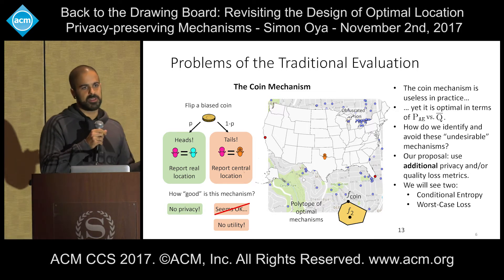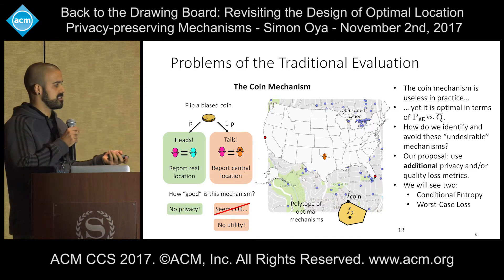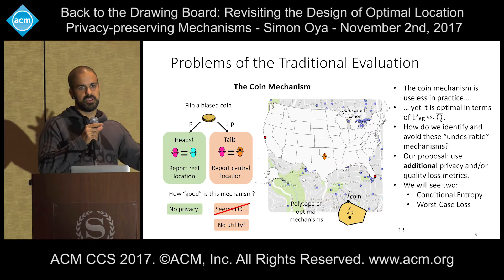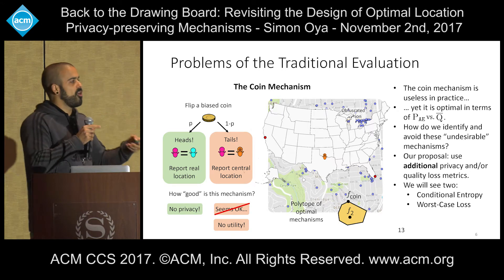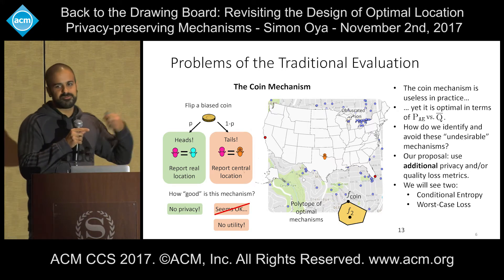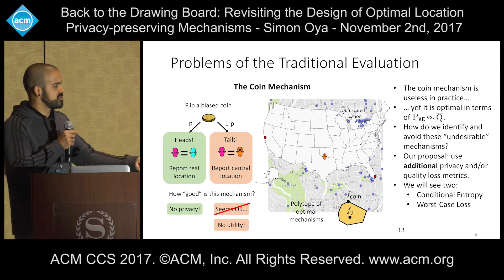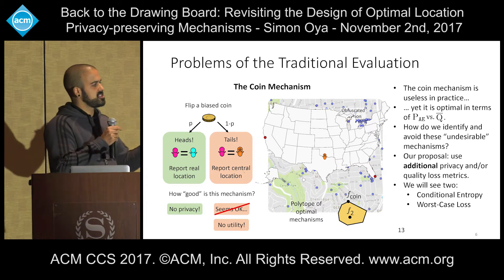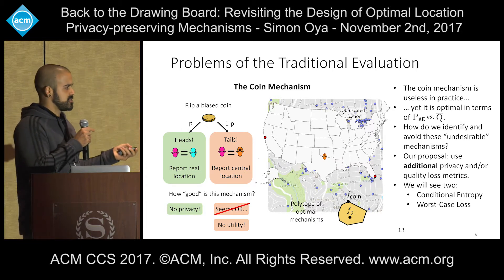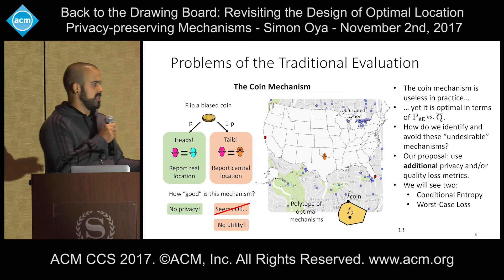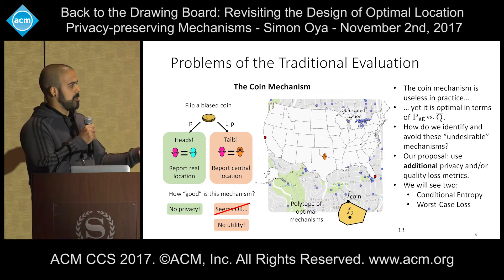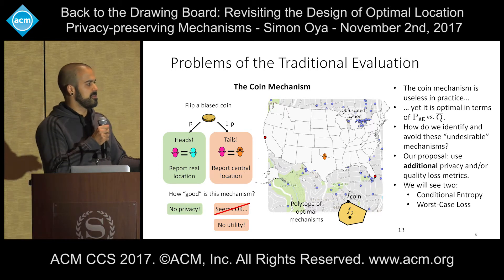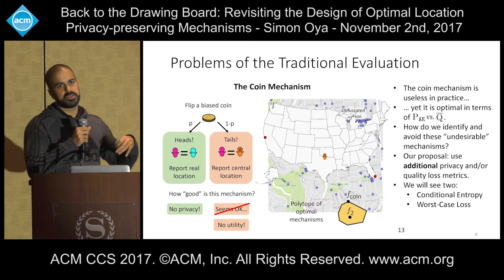However, the coin mechanism is considered optimal according to the traditional evaluation approach, because we are comparing average error versus average loss — and on average it is optimal, yet every single realization is awful in terms of either privacy or utility. To identify this kind of undesirable mechanism, we propose using additional metrics — additional privacy and quality loss metrics. In this paper we focused on two, but there could be other options.